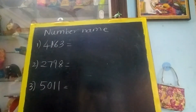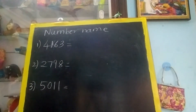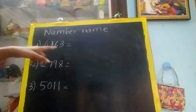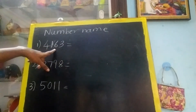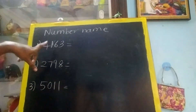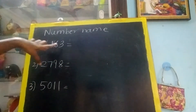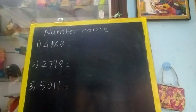Hello students. Now I will explain you how to read number names if it is 4 digits. First of all check out: 1s, 10s, 100s, 1000s. 4 digits means it is 1000 only.